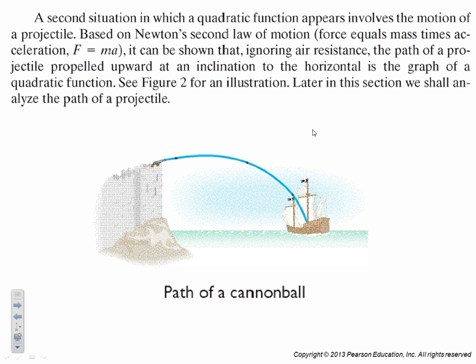A second situation that's quadratic involves motion of a projectile. Thanks to gravity, all of our projectile motions are usually quadratics. Based on Newton's second law of motion, force equals mass times acceleration, f equals ma, it can be shown that ignoring air resistance, the path of a projectile propelled upward at an inclination to the horizontal is the graph of a quadratic function. Later in this section, we'll analyze the path.